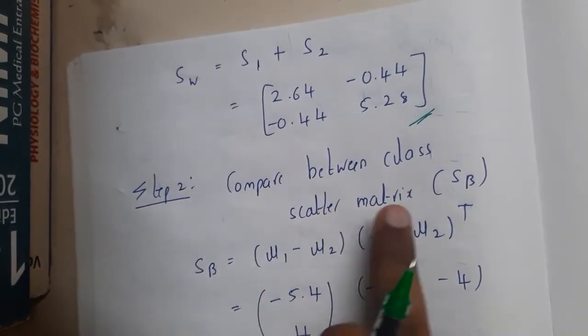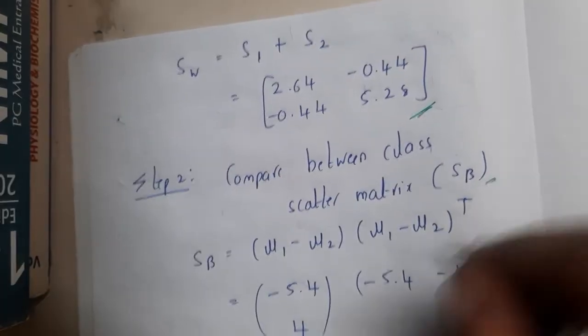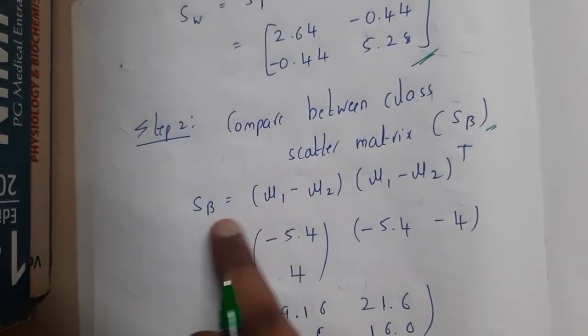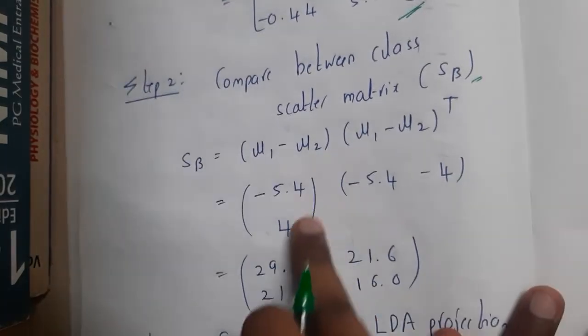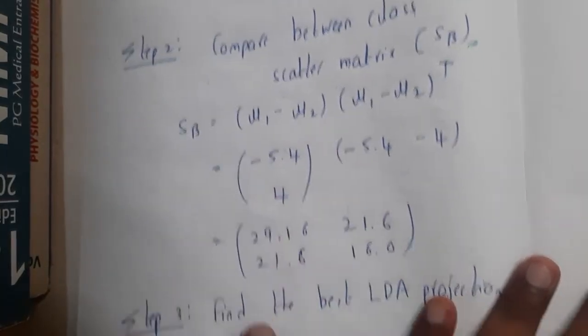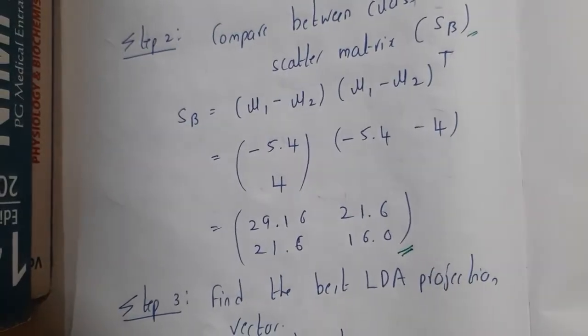Once you got these two as the results, you will add them. So you got this as the final result. Now you will start comparing with the between-class scattering matrix, that is SB. So SB will look in this way: SB equals (μ1 - μ2)(μ1 - μ2)^T. Once you write them in this way, once you cross multiply, you will get this matrix.